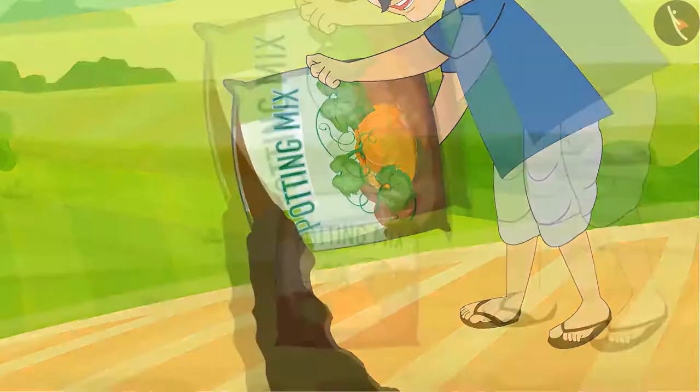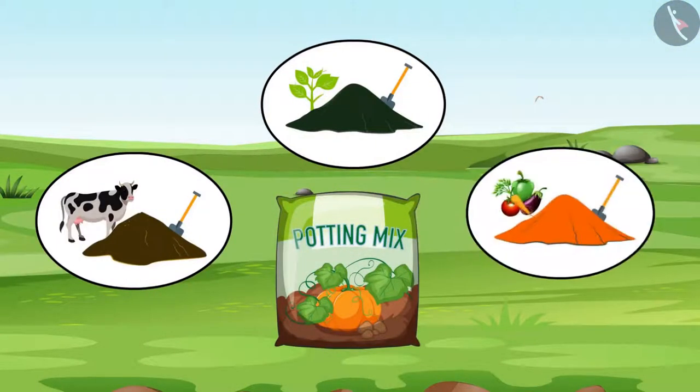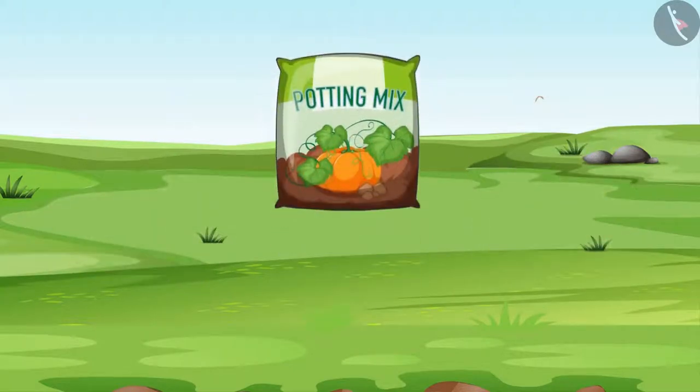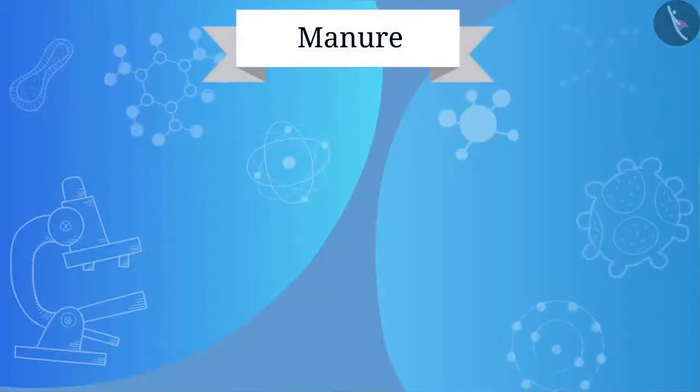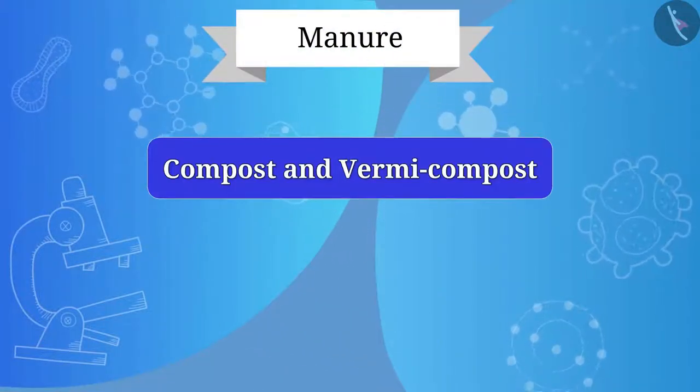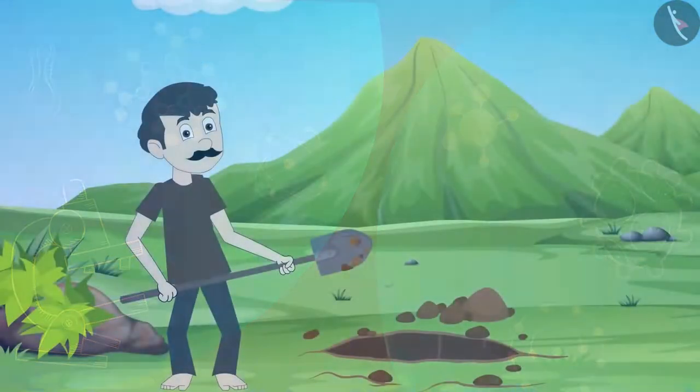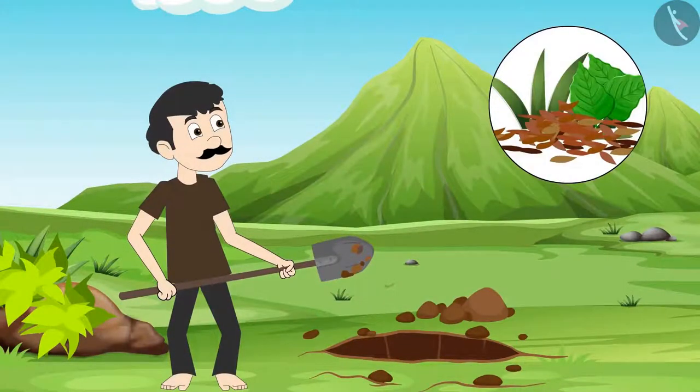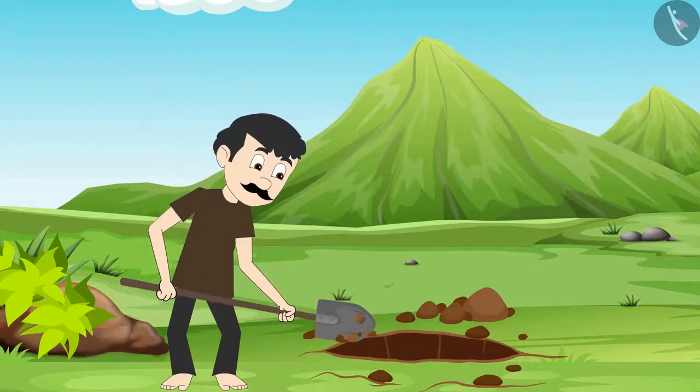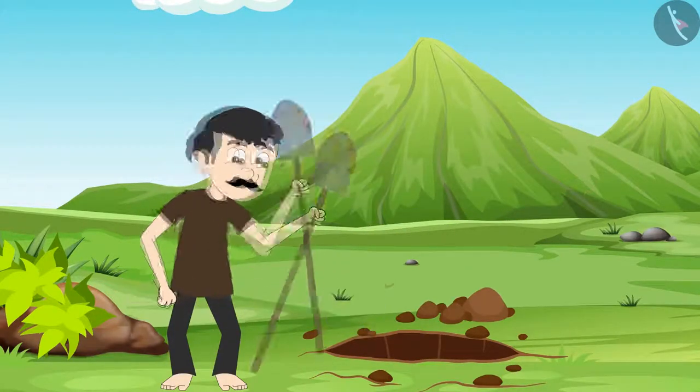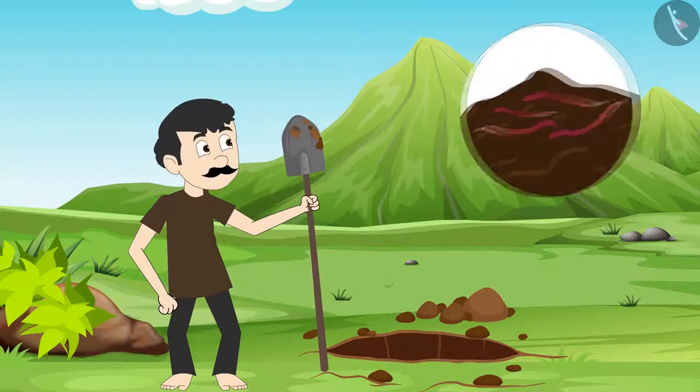You must have seen farmers adding dark matter to the soil before sowing seeds. This dark matter is called manure. Manure is prepared by decomposing dead plants, animal waste, vegetable waste, etc., which makes the soil rich. Manures are of two types: compost and vermicompost, and the other is green manure.